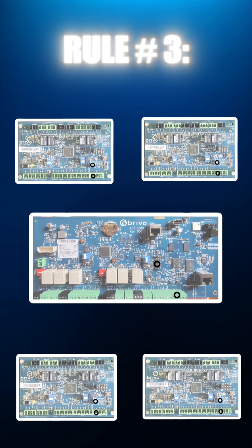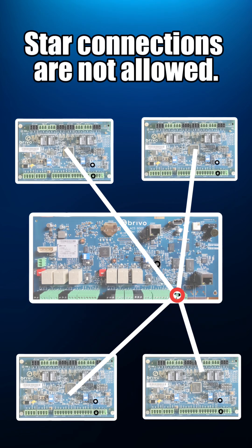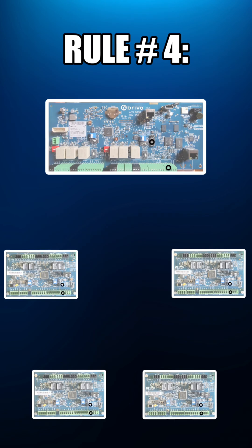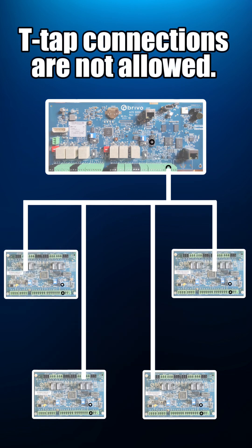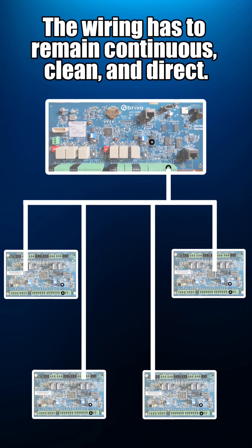Rule 3: Star connections are not allowed. Wiring must follow a straight path from board to board without branching. Rule 4: T-tap connections are not allowed. The wiring has to remain continuous, clean, and direct.